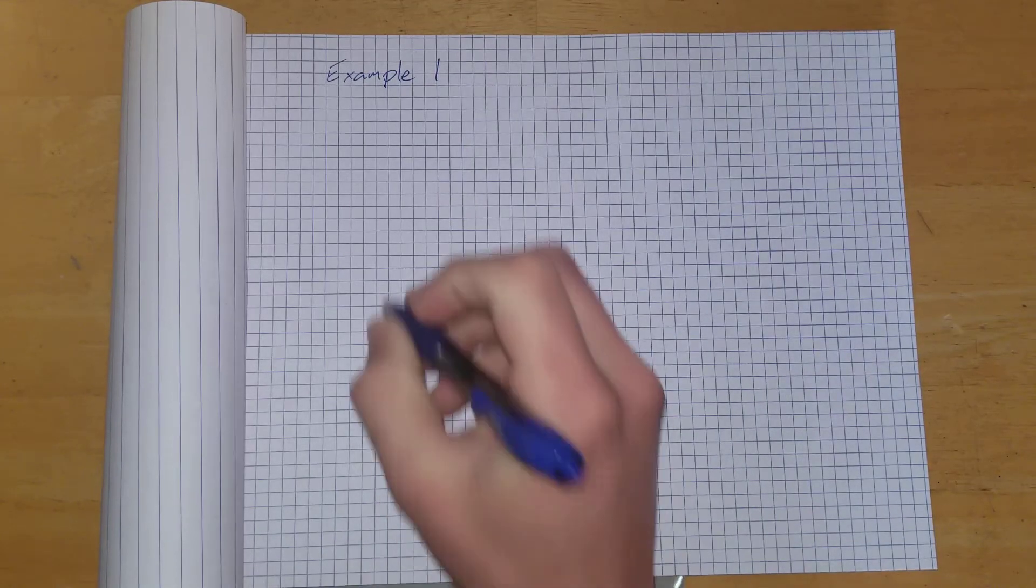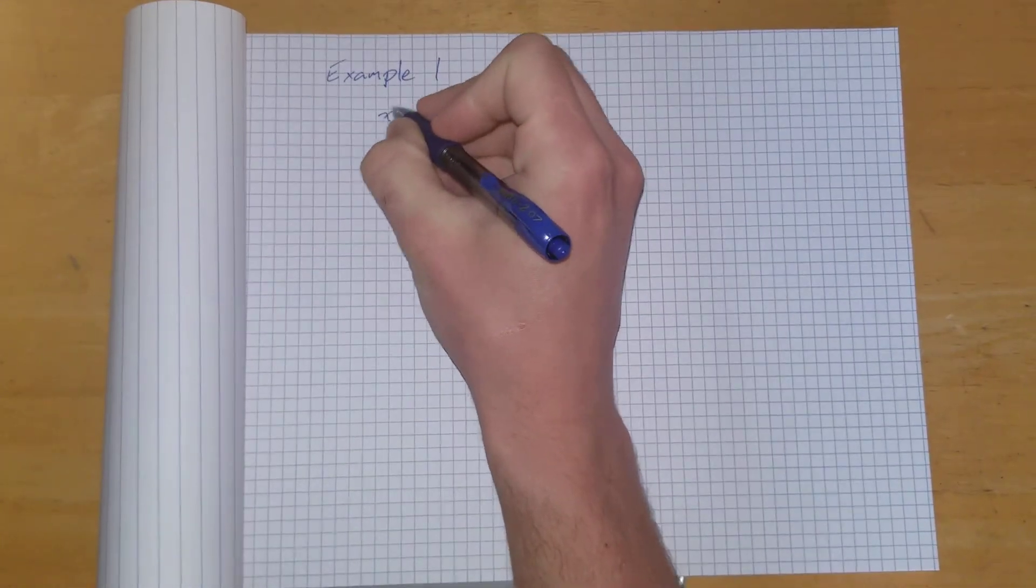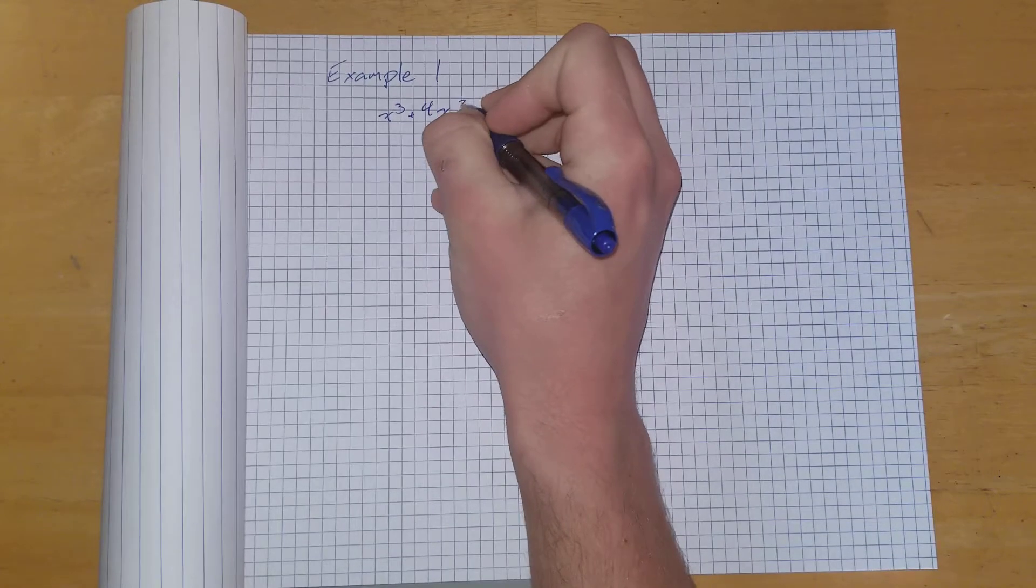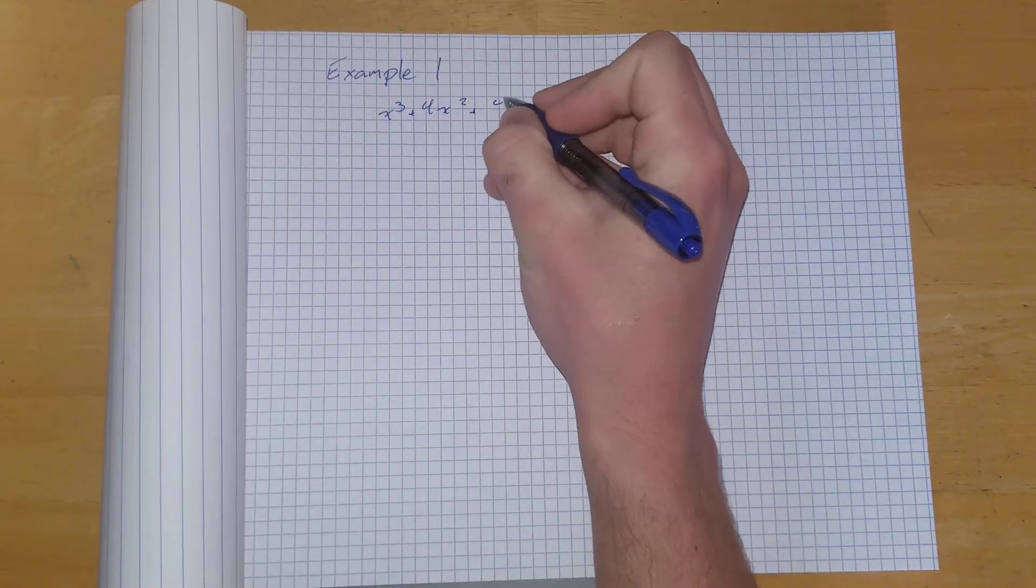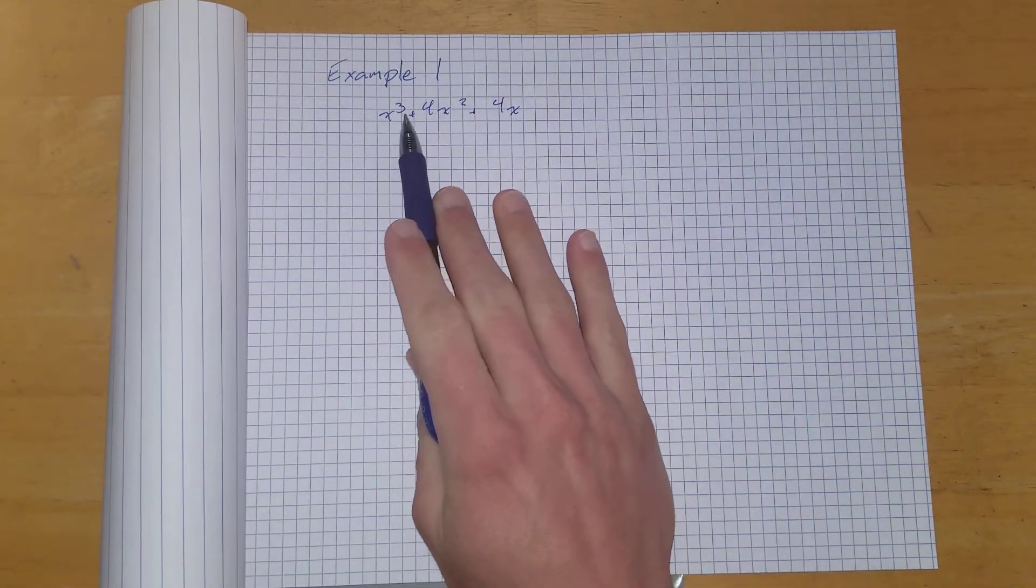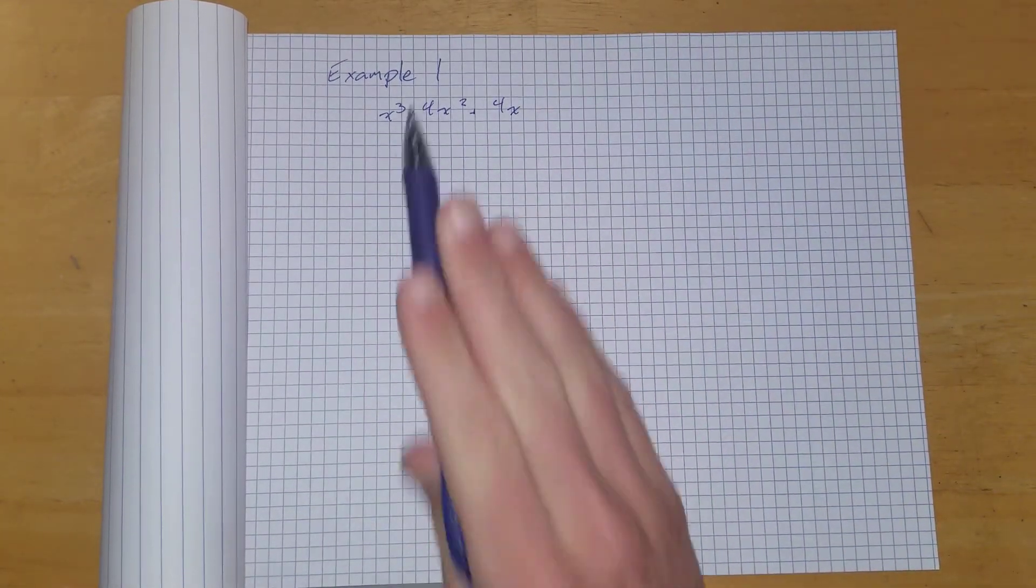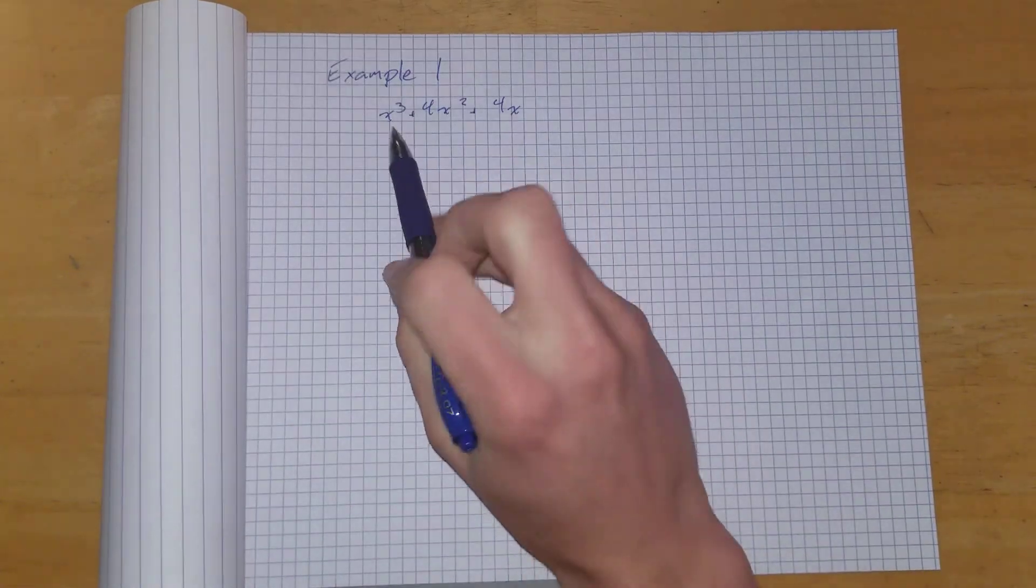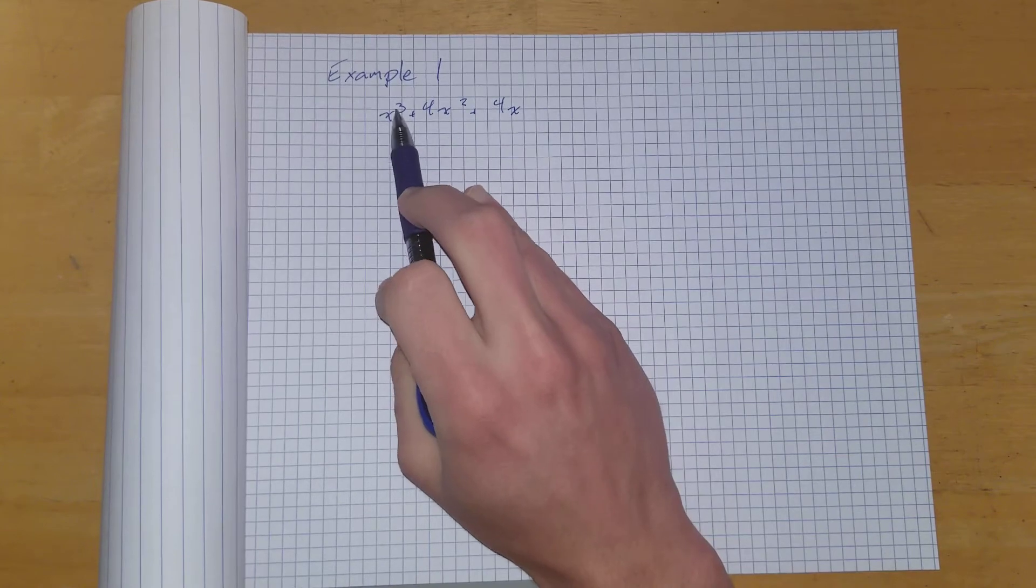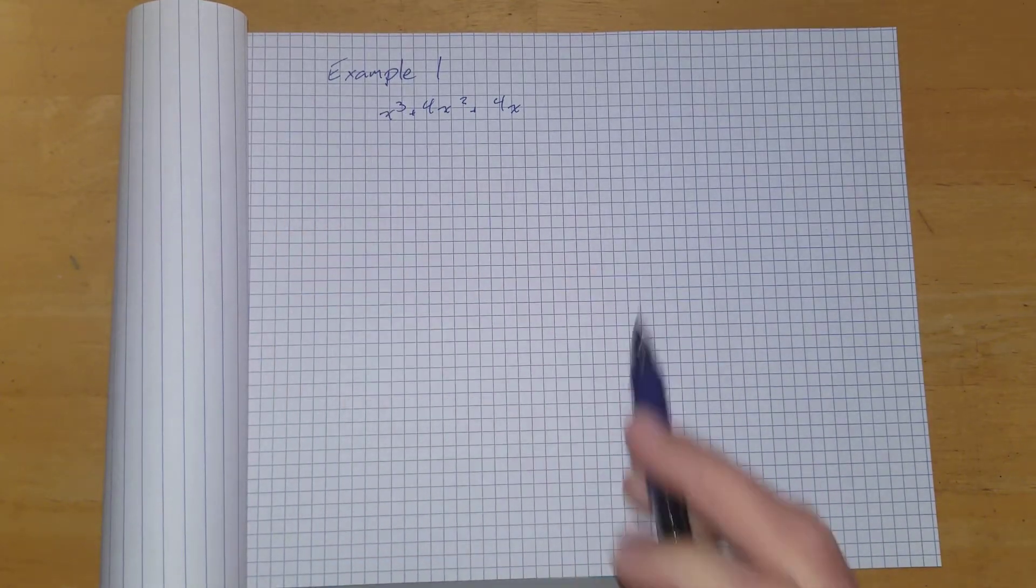We are told to factor x cubed plus 4x squared plus 4x. So we're used to having polynomials of degree 2, but now we have degree 3 because this is the highest degree of this polynomial.